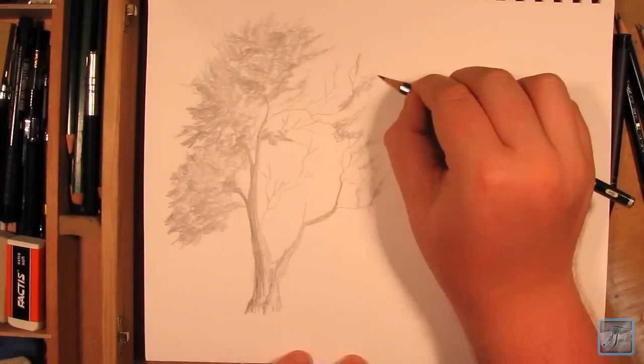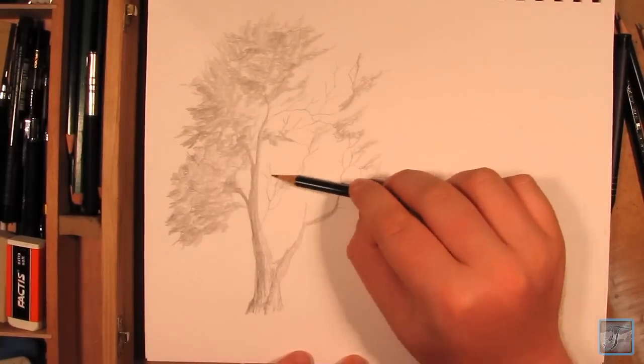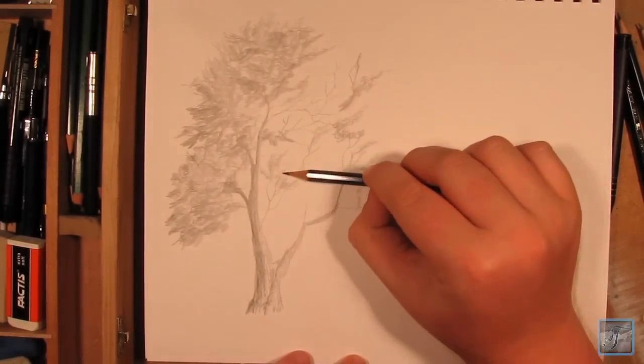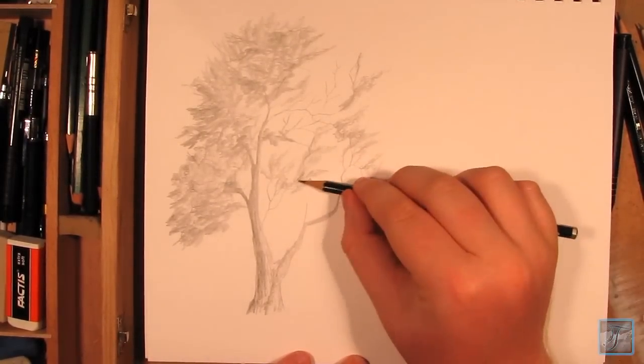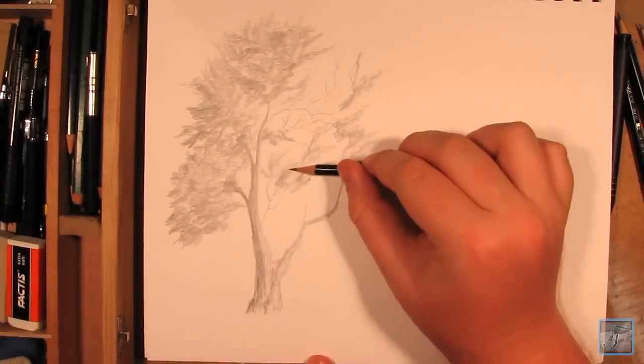With the lighter side of the tree, I went significantly lighter with the pencil pressure, just to kind of make a clear distinction between one side of the tree and the other—just to really kind of make it look like it has a lot of dimensions going on and it makes it just look like it's actually there on the page.